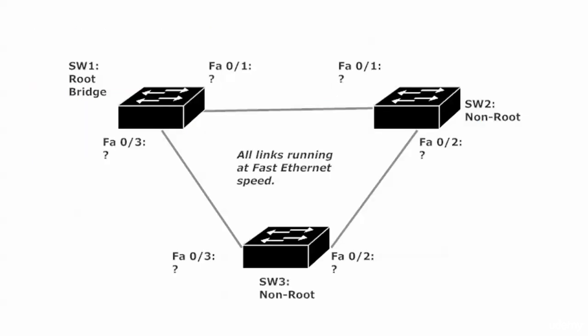Here's our network. We have Switch One, and Switch One is the root, so Switches Two and Three are non-roots. Switch One and Switch Two are trunking using their Fast Ethernet One interfaces. Switch Two and Switch Three are trunking using their Fast Ethernet Two interfaces. And finally, Switch Three and Switch One are trunking using their Fast Ethernet Three interfaces.